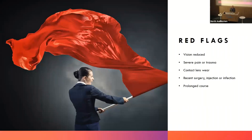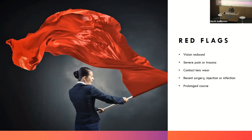Red flags to be aware of: vision significantly down in one eye, severe pain, severe trauma such as a car accident or industrial explosion, contact lens wear predisposing to corneal infections, recent surgery or injection, and a prolonged course not getting better — particularly if unilateral. You need to revisit the history and examine very closely.